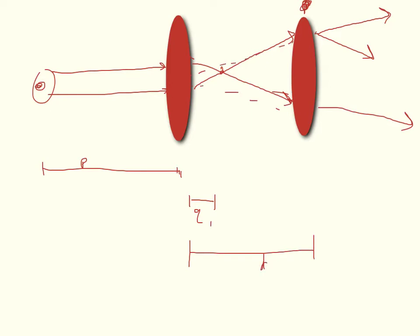The rule with multiple lenses is that where the first image is formed, that image becomes the object for the second lens. So we can set up P2 and imagine that those lines are at the same spot. We'll call this P2. Now I have a focal point and P2, so I can solve for Q2.